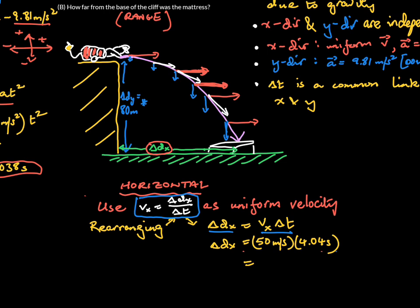Rearranging, we get Delta D X equals V_x times Delta T. We can simply put in our numbers and get approximately 200 meters. I'm not worrying about significant digits, but on a test or exam you should use the correct amount - the least amount you were given to begin with.